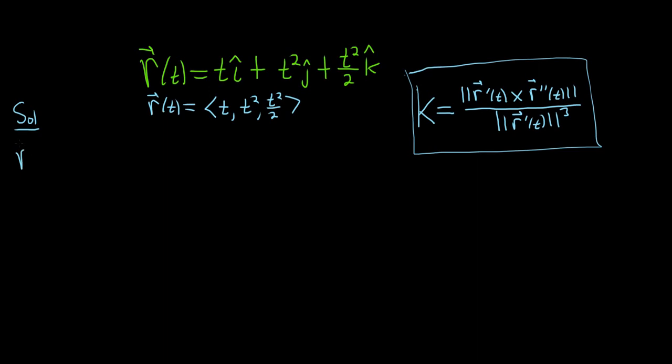Okay, so r prime is the derivative of r. So in component form, the derivative of t is 1, the derivative of t squared is 2t, and then when we take this derivative here, we end up with 2t over 2, so we just get t.